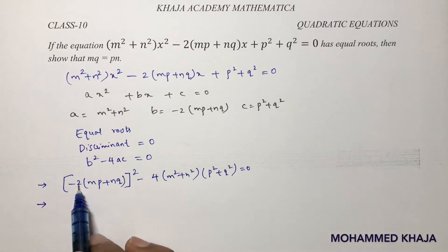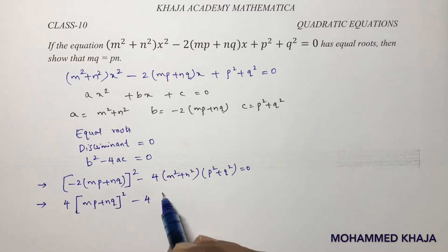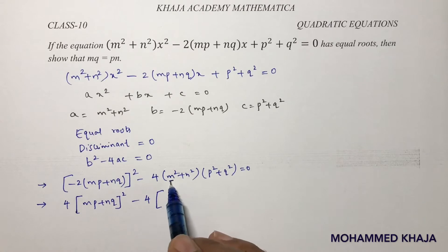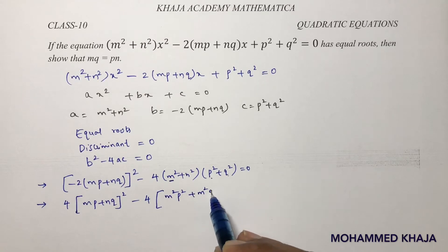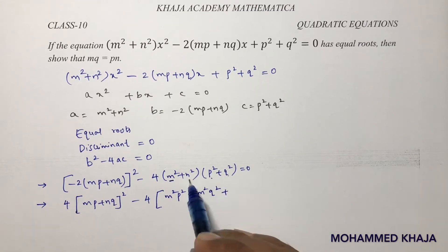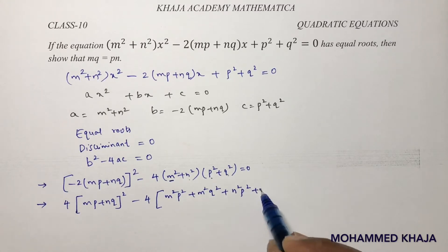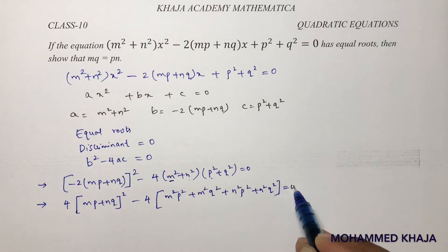Here (−2)² = 4, so we get 4(mp + n³)² − 4(m²p² + m²q² + n²p² + n²q²) = 0.